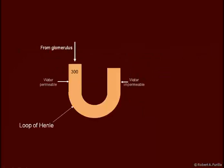If we look at the nephron, this is the loop of Henle. We're coming in here from the glomerulus at about 300 milliosmoles, isosmotic with plasma. The descending limb of the loop of Henle is permeable to water. The ascending limb of the loop of Henle is impermeable to water.